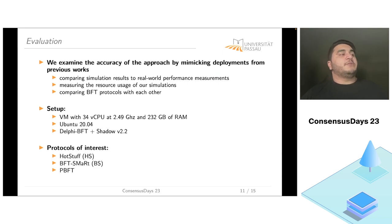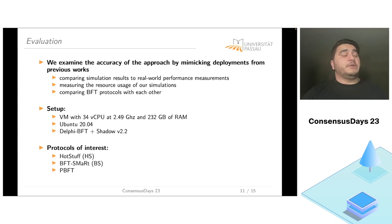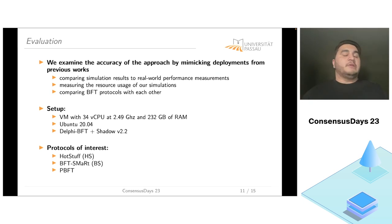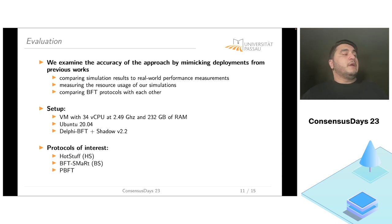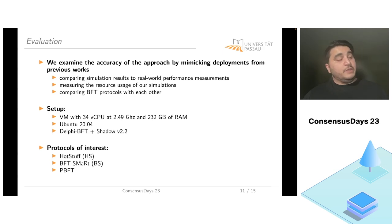To answer the second research question, we examine the accuracy of our approach by mimicking deployments from previous works. We use our simulation results and compare them to real-world performance measurements of these protocols, while also measuring resource usage of our simulations to examine Phantom's resource friendliness. We also briefly compare BFT protocols with each other using our simulation results. Our setup uses an Ubuntu virtual machine with 34 vCPUs at 2.4 GHz and 232 GB of RAM, using Delphi BFT with Shadow version 2.2. The protocols of interest are HotStuff, BFT-Smart, and PBFT.